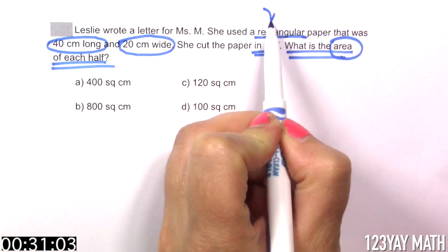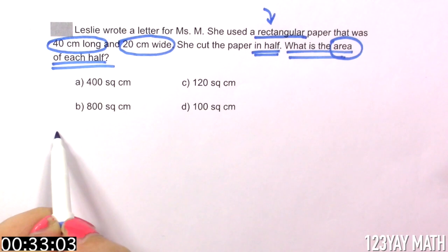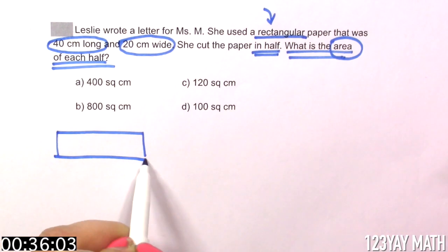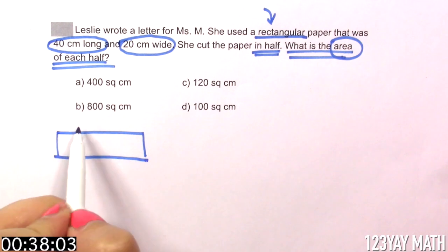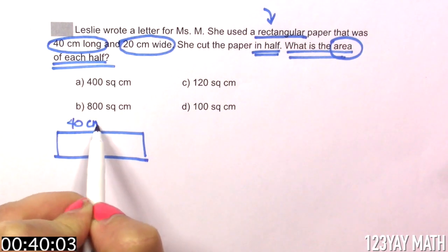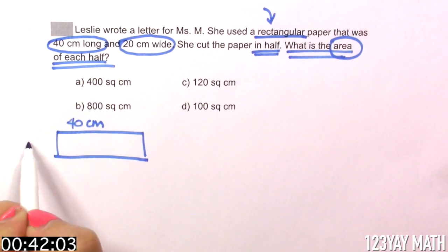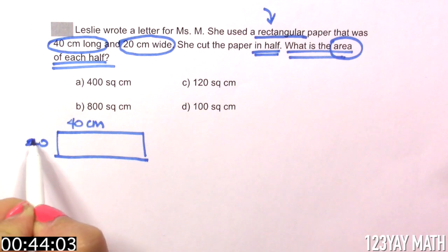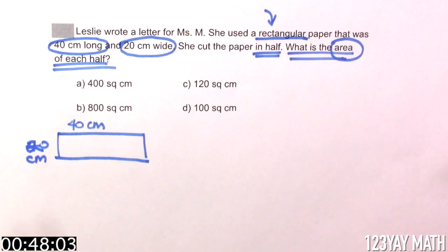Since it's a rectangular paper, we're going to draw a rectangle. And let's label the dimensions: 40 cm long and 20 cm wide.